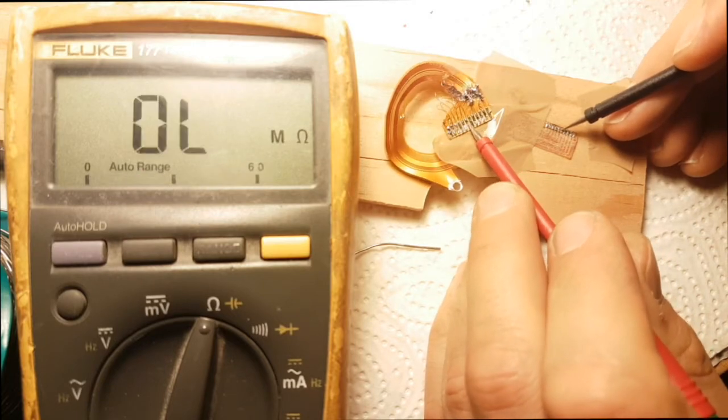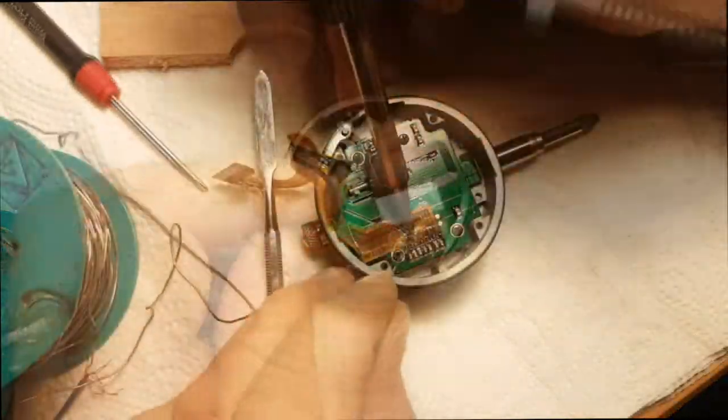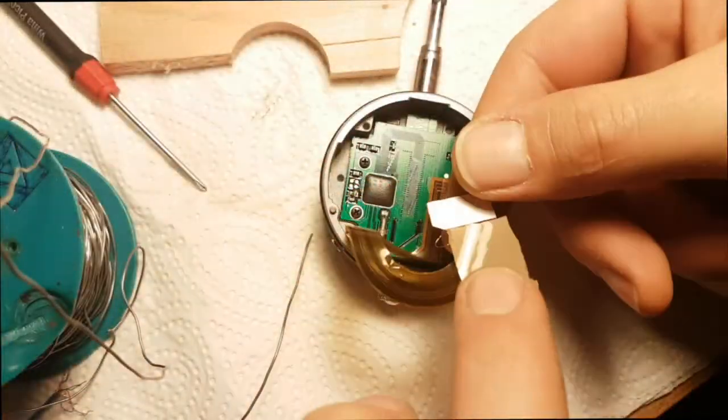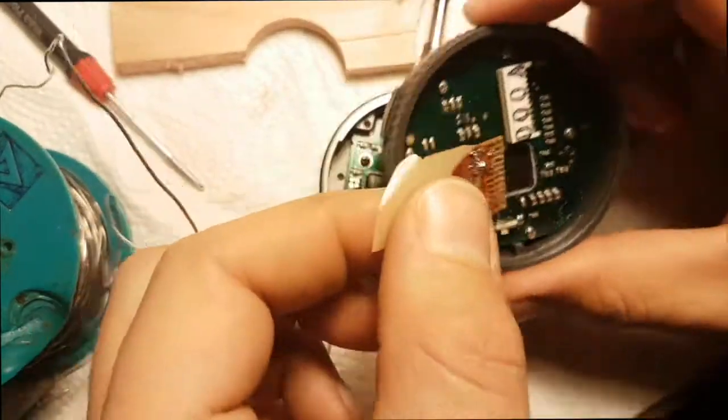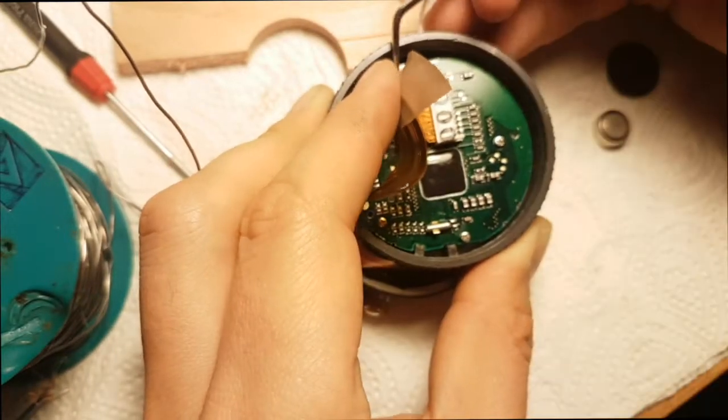I am checking for continuity and shorts with the multimeter. Now I am soldering it back on the PCB. This tape is to be able to remove it if I need to without tearing the solder joints. That is the whole purpose of it.